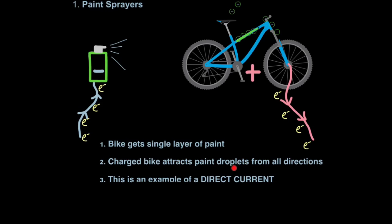So to recap, the bike gets a single layer of paint because once it's discharged, the paint droplets will not be attracted to the same part of the bike. The charged bike attracts paint droplets from all directions. So you can spray the paint from one direction only but all of the bike will be covered with paint. Also because now we have electrons flowing in one direction around this system, around this circuit, this is an example of a direct current. And that is something that does come up in exams. So be aware that this is an example of a direct current.